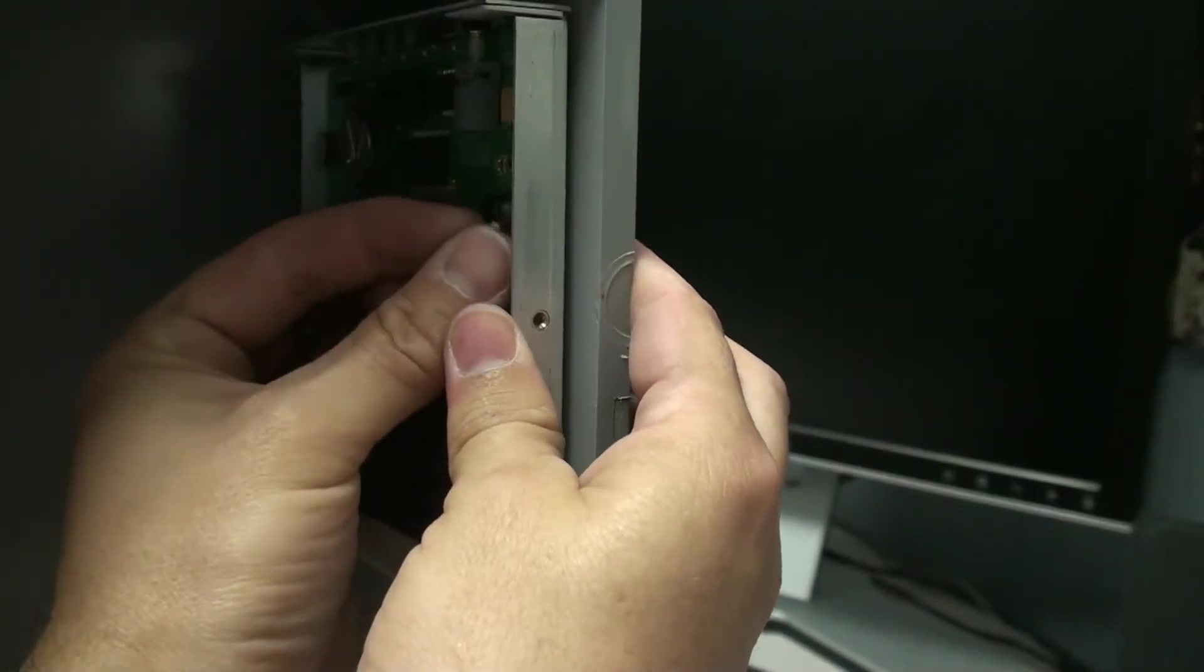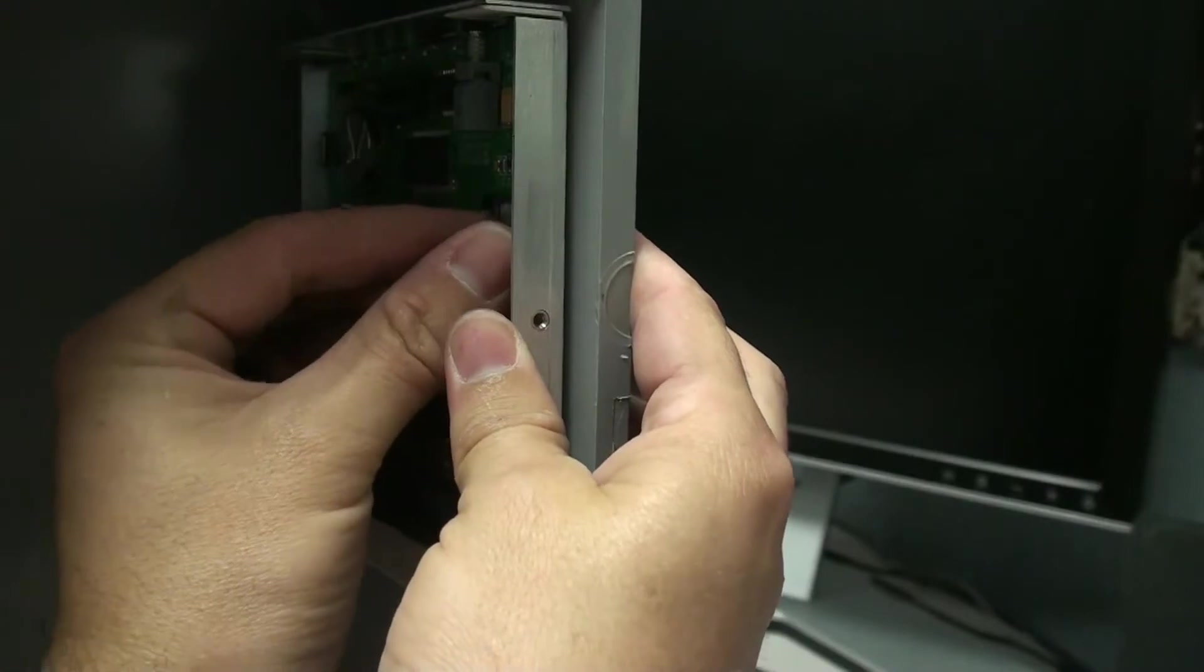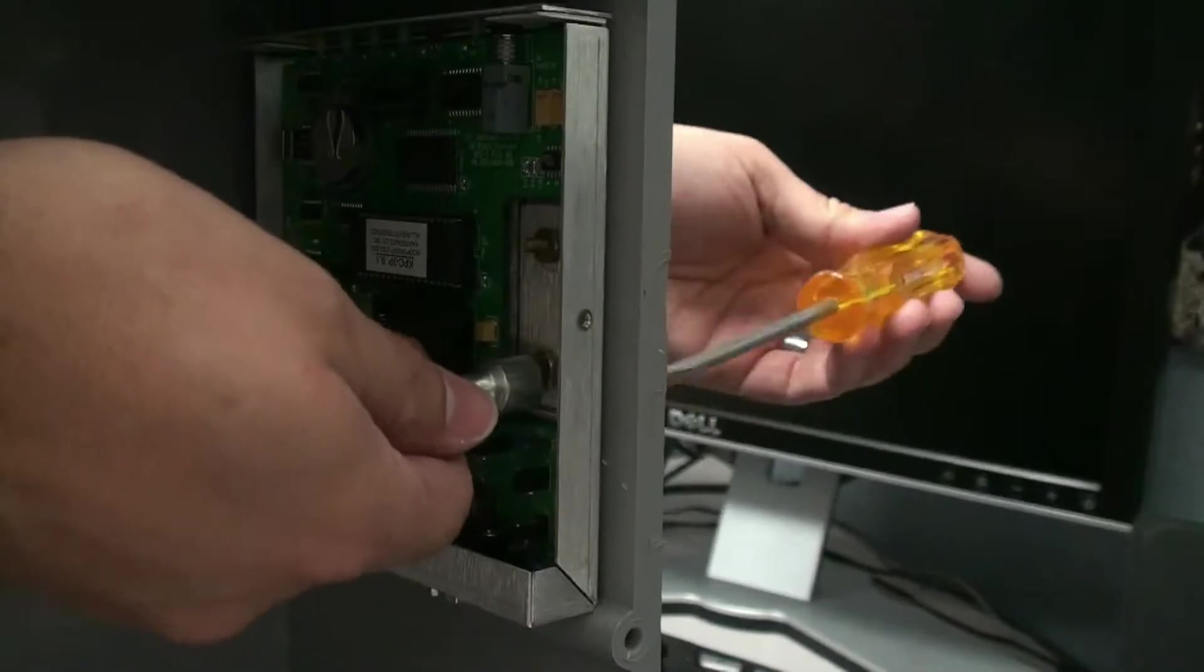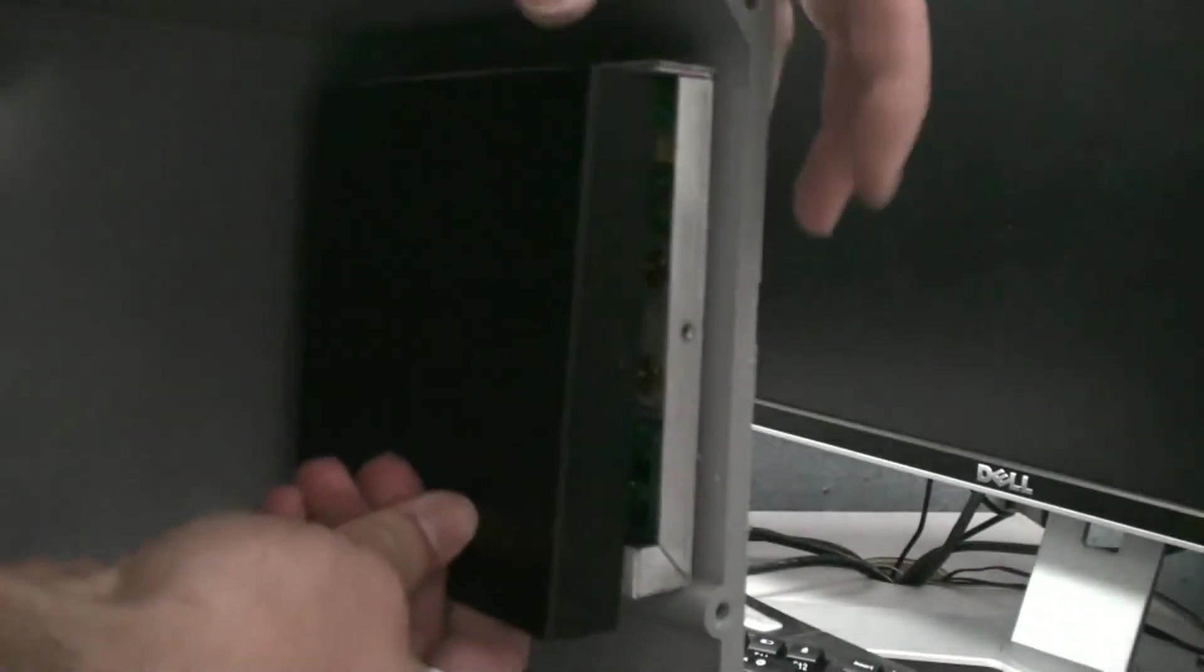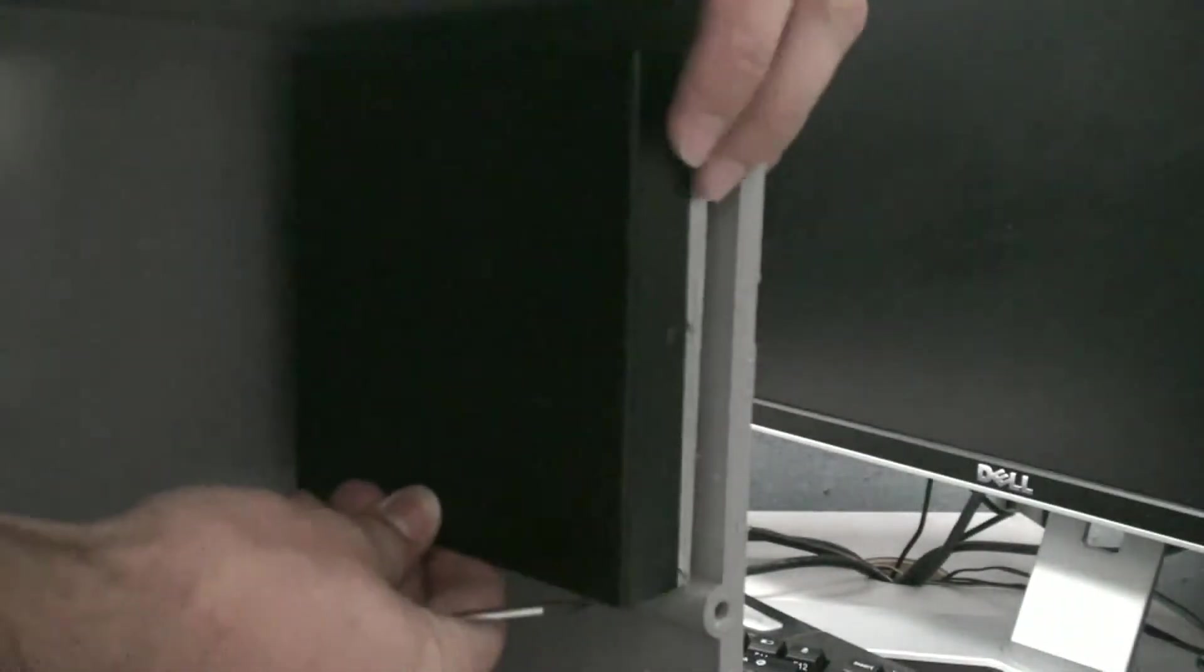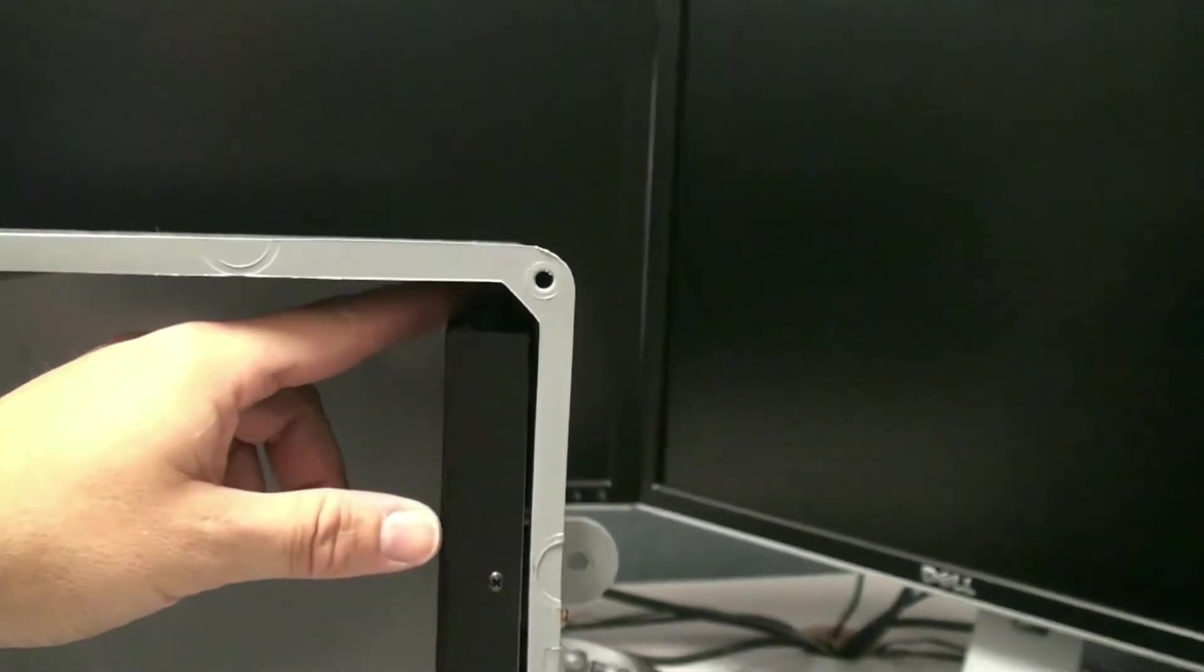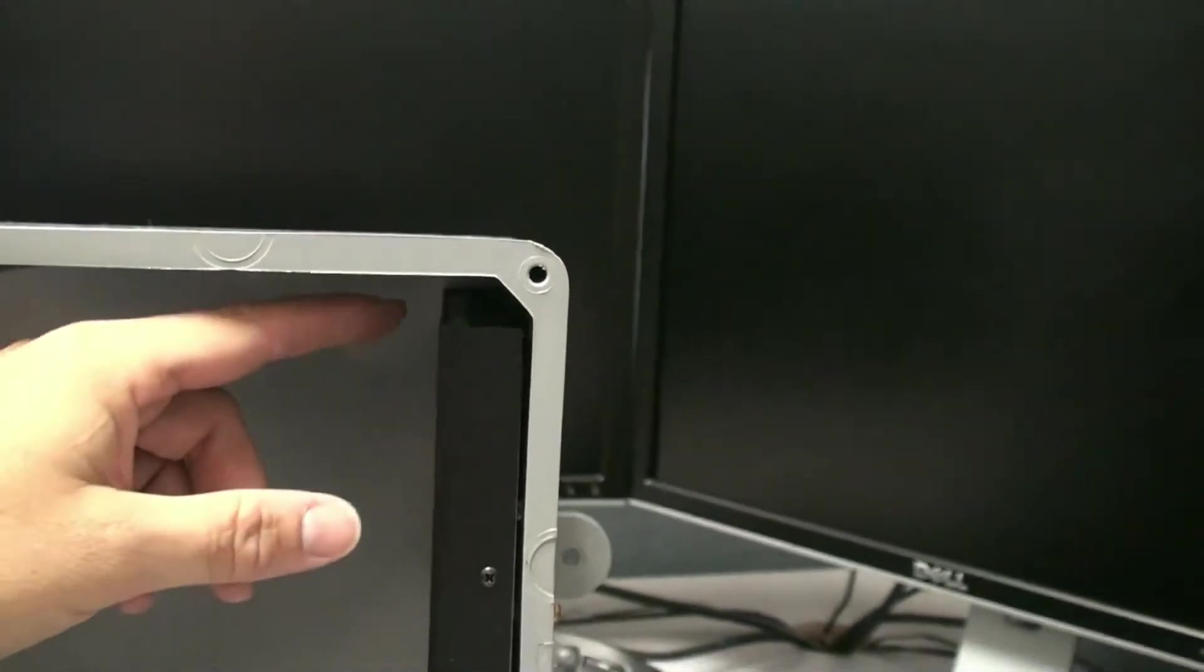Using screws and bolts, secure the TNC to the sidewall of the electronics box and replace the TNC cover. Check to be sure that you've left enough room to press the power button on the TNC.